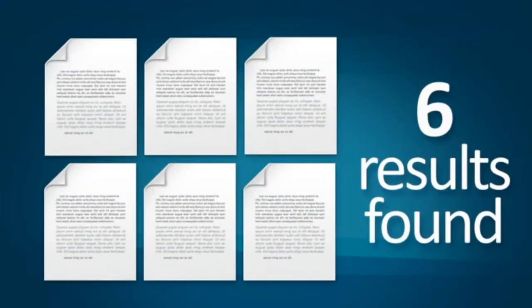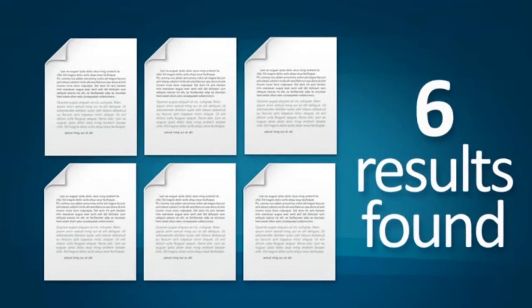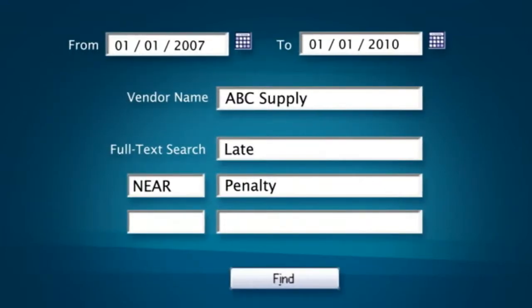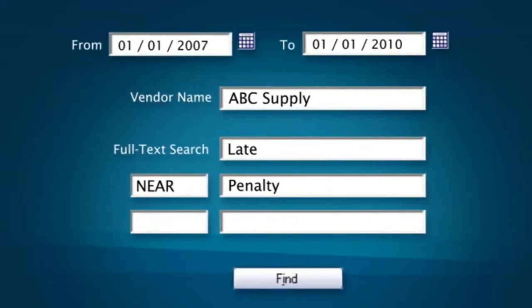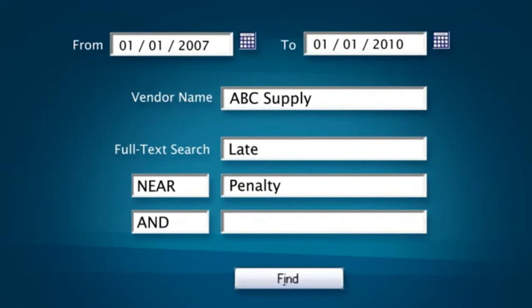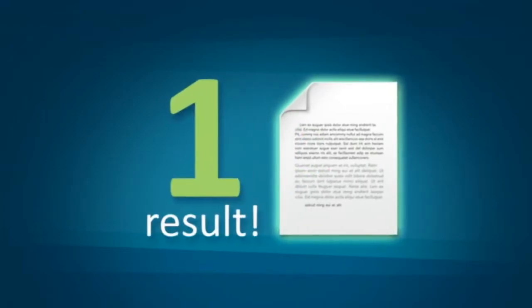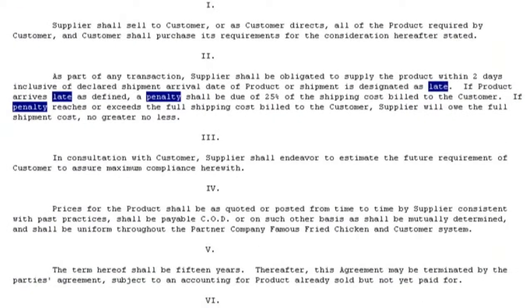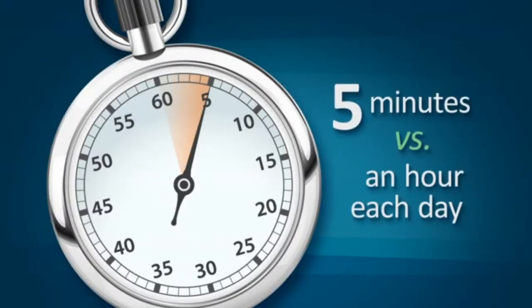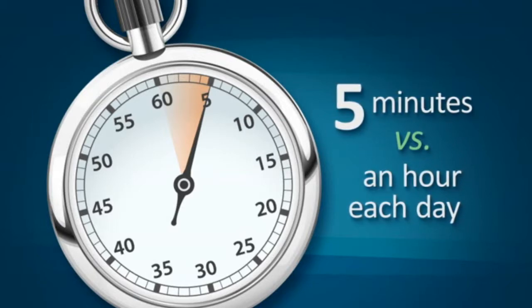You could investigate them one by one, but maybe you can narrow it down even more. You recall Brent being the name of the vendor rep, so you search for documents that also contain the word 'Brent.' As a result, you've narrowed it down to a single document that you open and see a hit highlight display of the information in context. From start to finish in under five minutes.